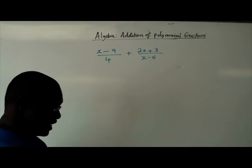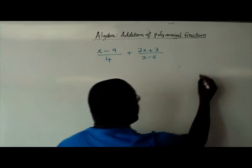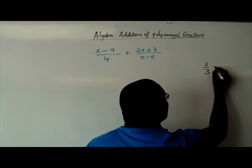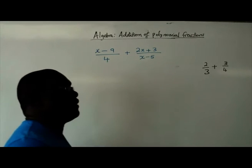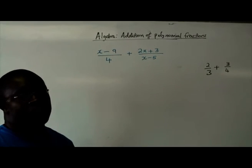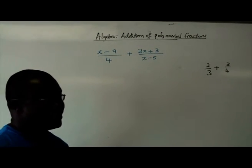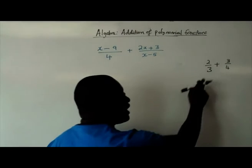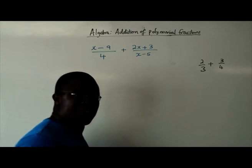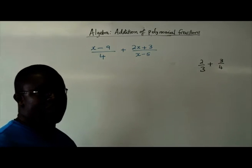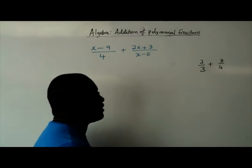Before going into that actual question, let's try and look at a question like maybe 2 over 3 plus 3 over 4. That's simple addition of fractions. We said that for us to be able to add these two, the denominators have to be equal first. And then after they're equal, then we add the numerators.